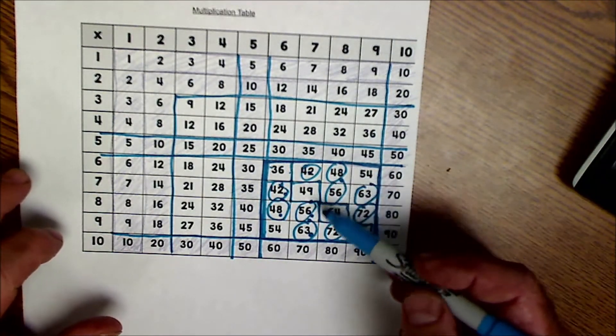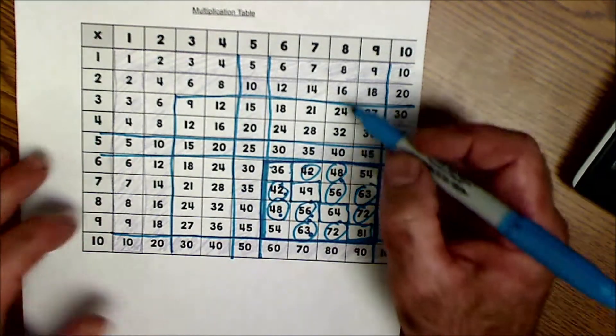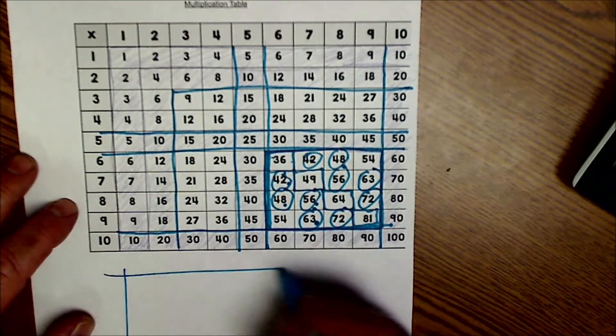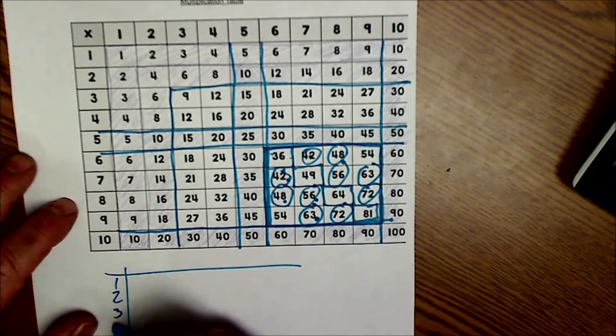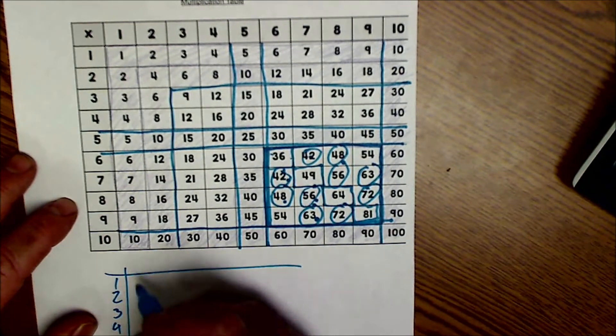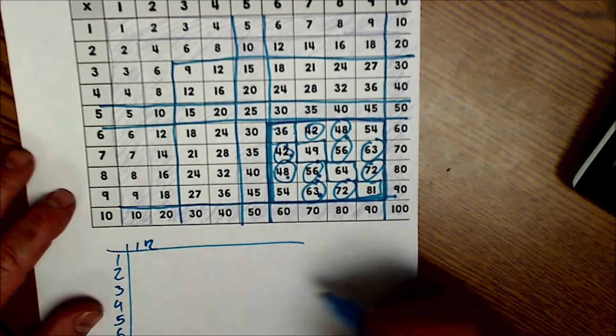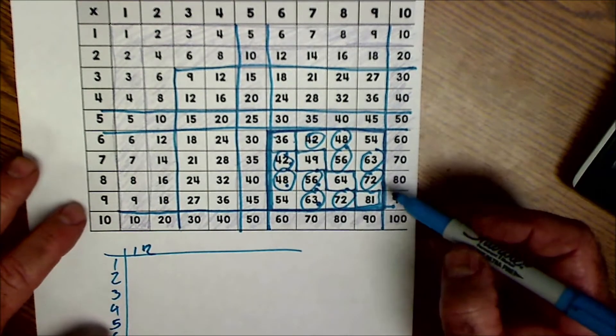So once you get those facts down, you got to just keep practicing them. Good way to do it is also just take a blank table to fill it in and make sure you do this. It shouldn't really take very long and just fill in that table and do that every day. But you got to have the repetition.